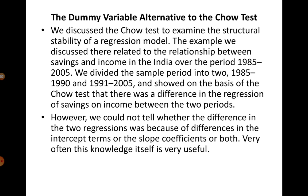In the case of India, we suspected that the relationship between savings and income had experienced a change around 1990-91, which is when India was forced into the liberalization, privatization, and globalization regime. In the Chow test, we ran three separate regressions: the first was a pooled regression with all observations from 1975 to 1996-97, running a single regression with savings as Y and per capita GDP or GNP as X. This is called the restricted model, because we impose the restriction that the relationship between savings and income is constant throughout the entire 20-year period.